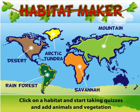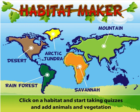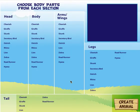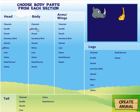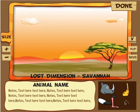If I go to create new habitat I'll start all over again. Let's try the savanna and go to the lost dimension habitat. This is what kids really enjoy — they can create their own unique life form made up of different parts of different animals. Let's say I want the head of a rhino, the body of a giraffe, the wings of a secretary bird, the legs of an ostrich, and the tail of a lion. Now I'm going to click the create animal button.